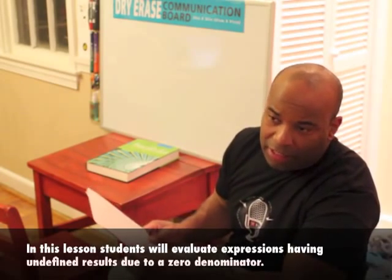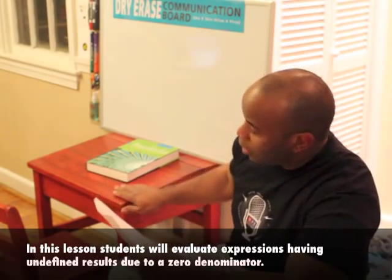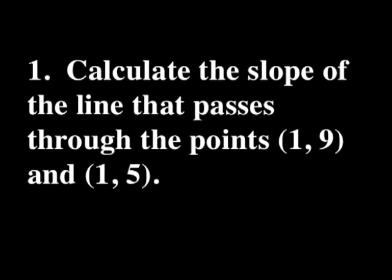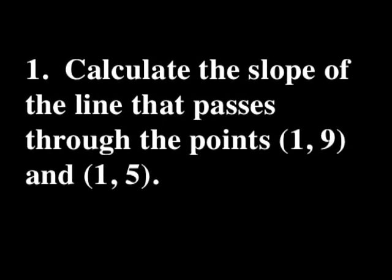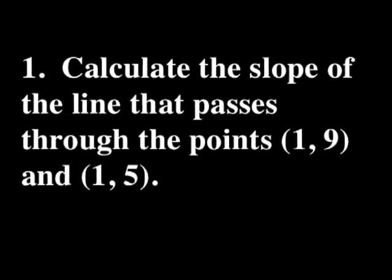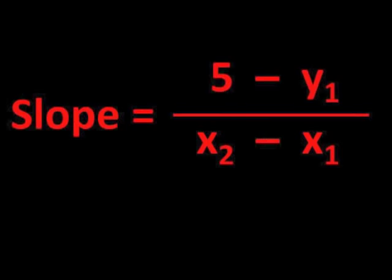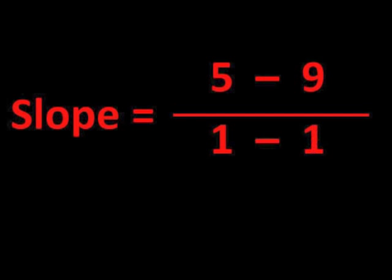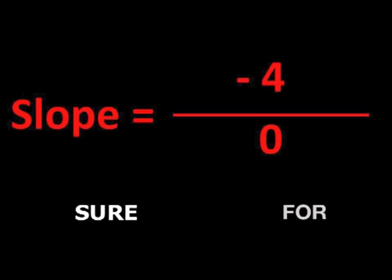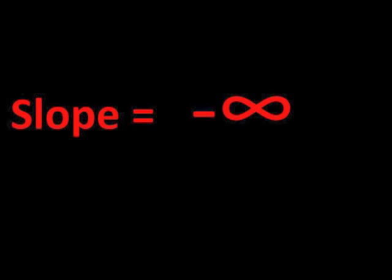The topic of the lesson is undefined expressions. Please take your seat while I read the first question. Number one: calculate the slope of the line that passes through the points (1, 9) and (1, 5). Well, the slope is the ratio of rise over run. So that's 5 minus 9 over 1 minus 1. And 5 minus 9 is negative 4, and 1 minus 1 is 0 for sure.